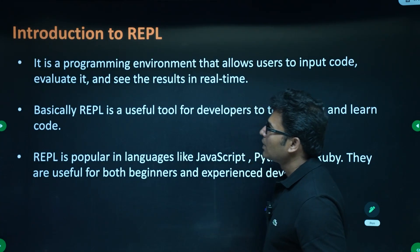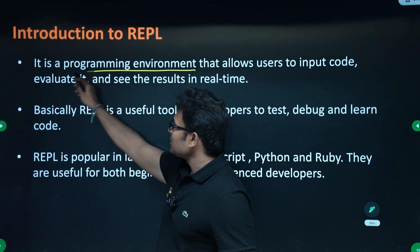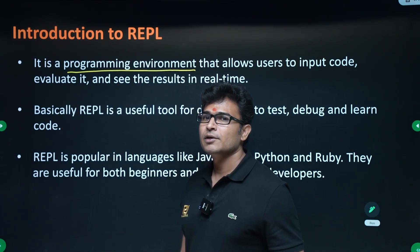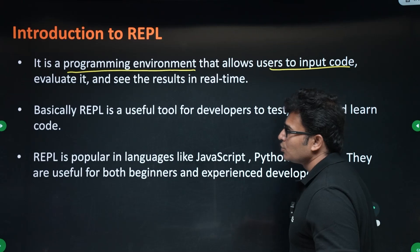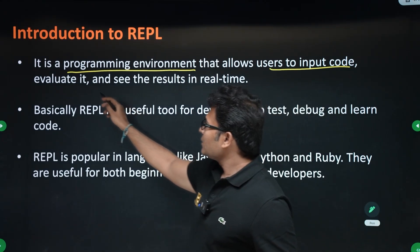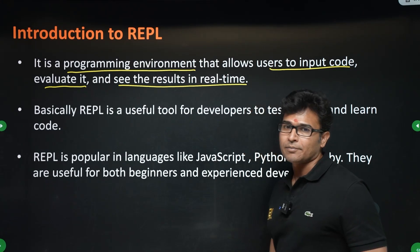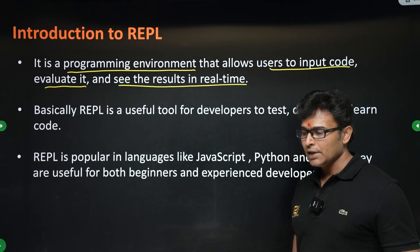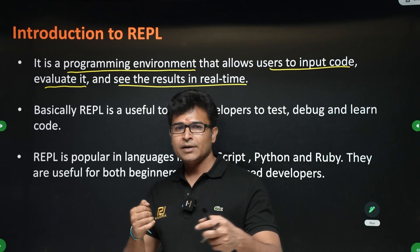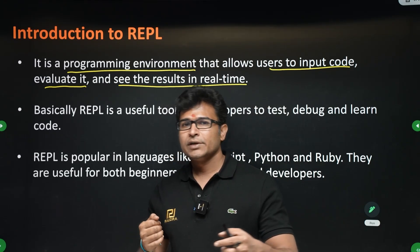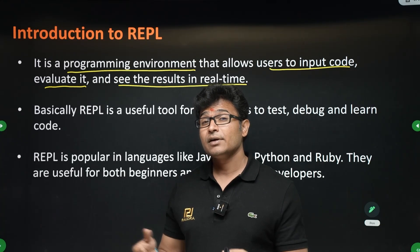REPL is a programming environment that allows the user to input code. Python will evaluate it and the results will be shown in real time, which means you will be interacting with it. Generally, the common practice is to write the entire program and execute it as a whole to see the output.